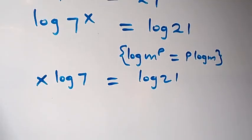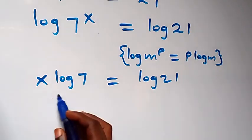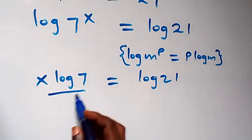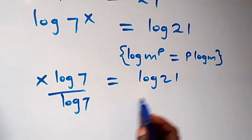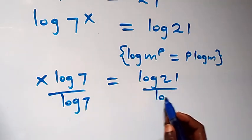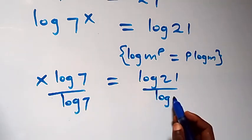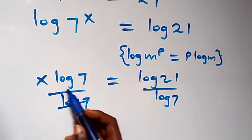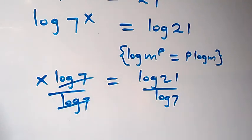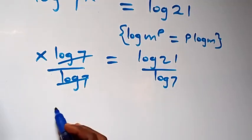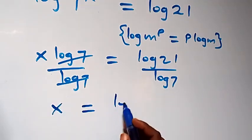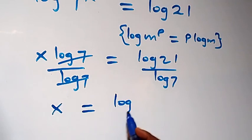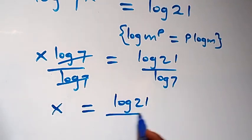Then let's divide both sides by log 7. Dividing this side by log 7 and also this side by log 7 — the log 7s cancel each other — and we have x equals log 21 over log 7.